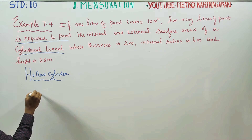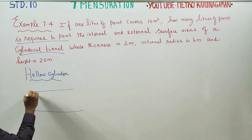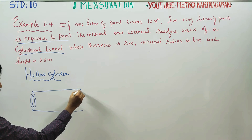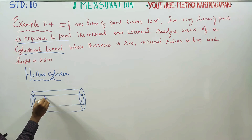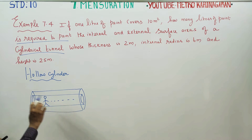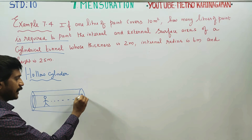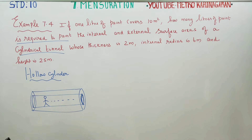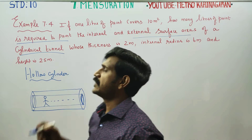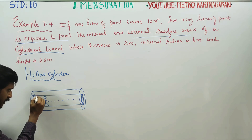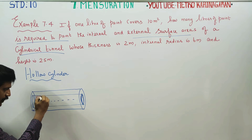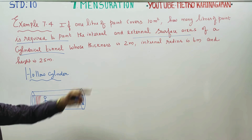If you look at one of the tunnels, there will be a gap in the cylinder — it will be a hollow tunnel. We need to paint the internal and external surface area. The internal surface area is painted on the inside, and the external surface area is painted on the outside.